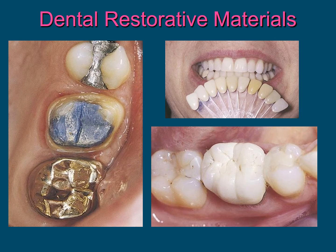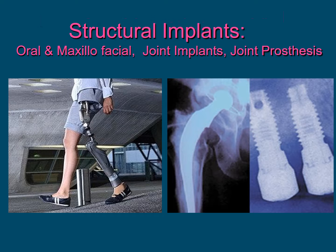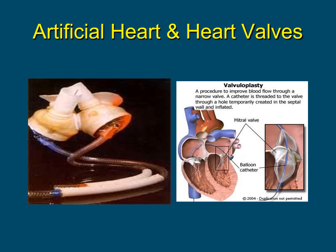The following pictures are examples of dental restorative materials: metallic or composite fillings and casting alloys, and also ceramics for fixed and removable intraoral prosthesis. These images are examples of structural implants. An artificial heart or heart valve are examples of cardiovascular implants.